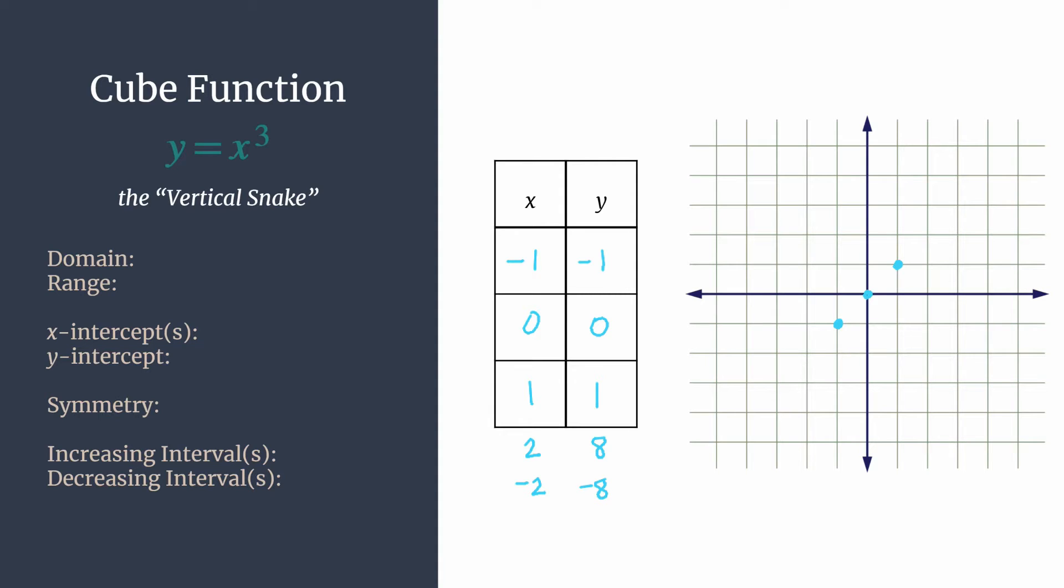So let's plot those points. So we see 2, 8 would be somewhere up here. Negative 2, negative 8 would be somewhere down here.